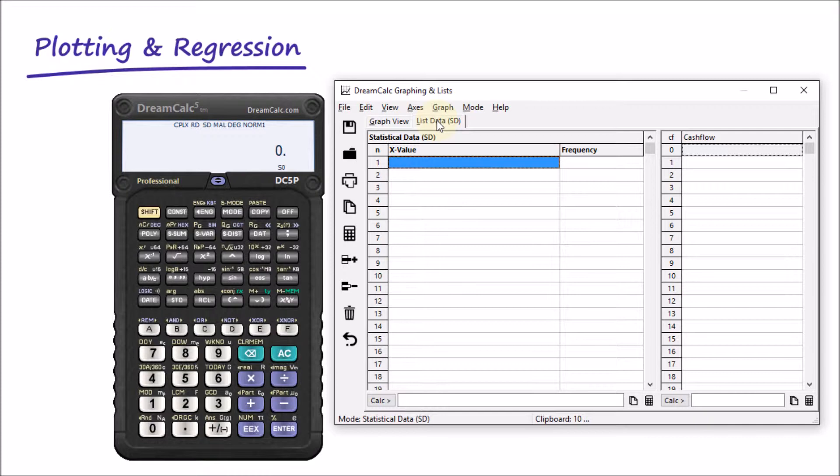We are going to be using the XY list, so we'll start by putting the calculator into linear regression mode. We can do this from either the calculator's main window on the left or the graphing window here.